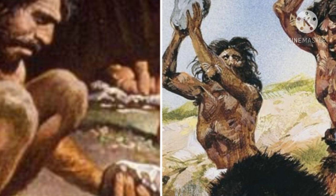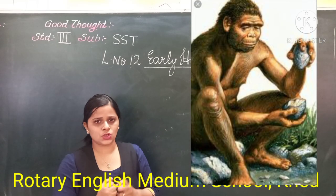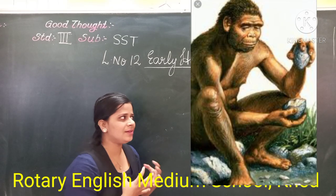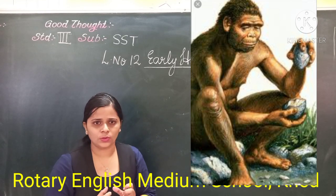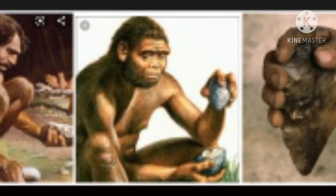It was not easy to use all stones properly. So these early human beings started to sharpen the stone. You can see here the image, students — how they started sharpening the stone. What they have done? They shaped them by striking two stones together.